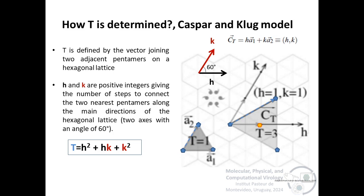How is T determined? T is defined by the Caspar and Klug model by the vector connecting two adjacent pentamers on a hexagonal lattice. h and k give the number of steps to connect the two nearest pentamers along the main directions of the hexagonal lattice. T is defined by this equation. For example, in T equals 1, with this fundamental face, to go from this pentamer to this pentamer, k is equal to 1 and h is equal to 0.